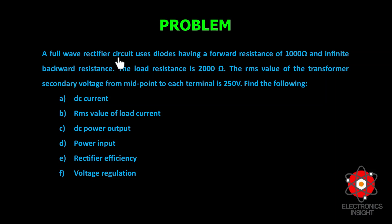The problem statement says we need to consider a full wave rectifier circuit which uses diodes having a forward resistance of 1000 ohms and infinite backward resistance. The load resistance is given as 2000 ohms, and the RMS value of the transformer secondary voltage from the midpoint to the end terminal is given as 250 volts. Since the voltage is specified from midpoint to end terminal, this is definitely a center tap full wave rectifier. We need to find the DC current, RMS value of load current, DC output power, input power, rectifier efficiency, and voltage regulation.